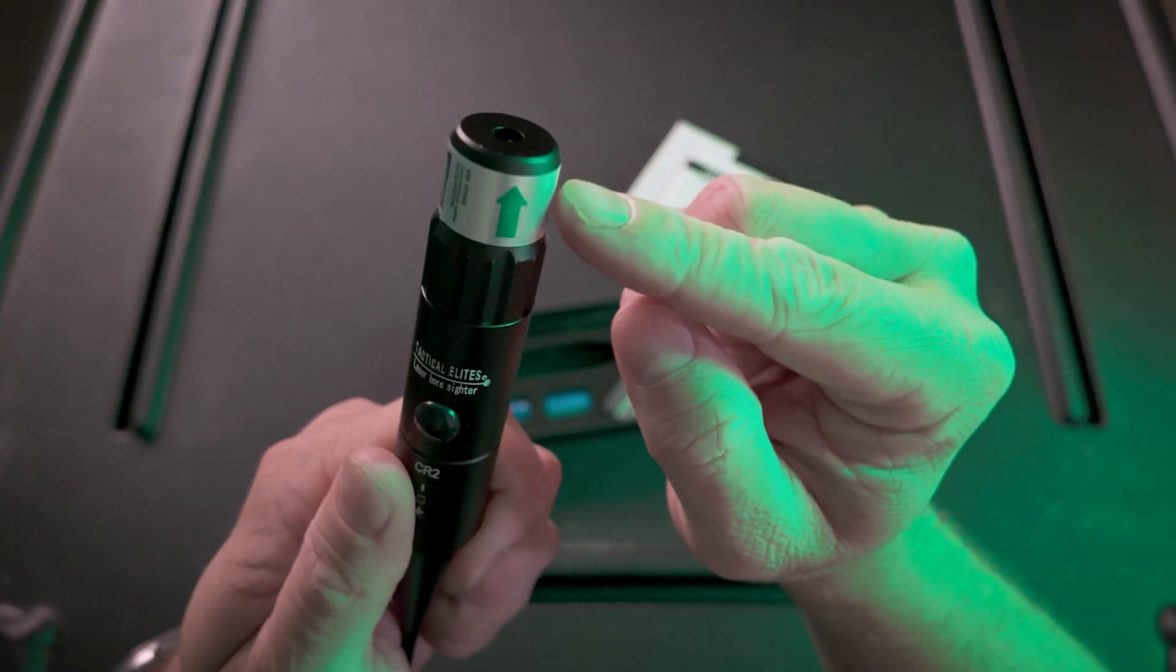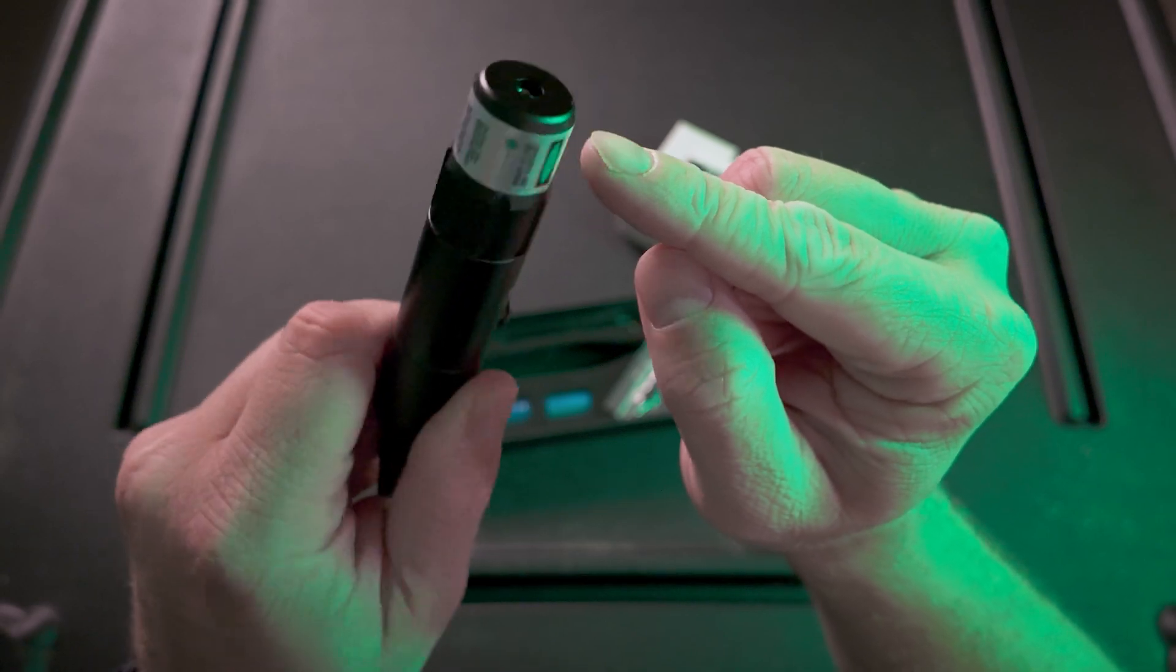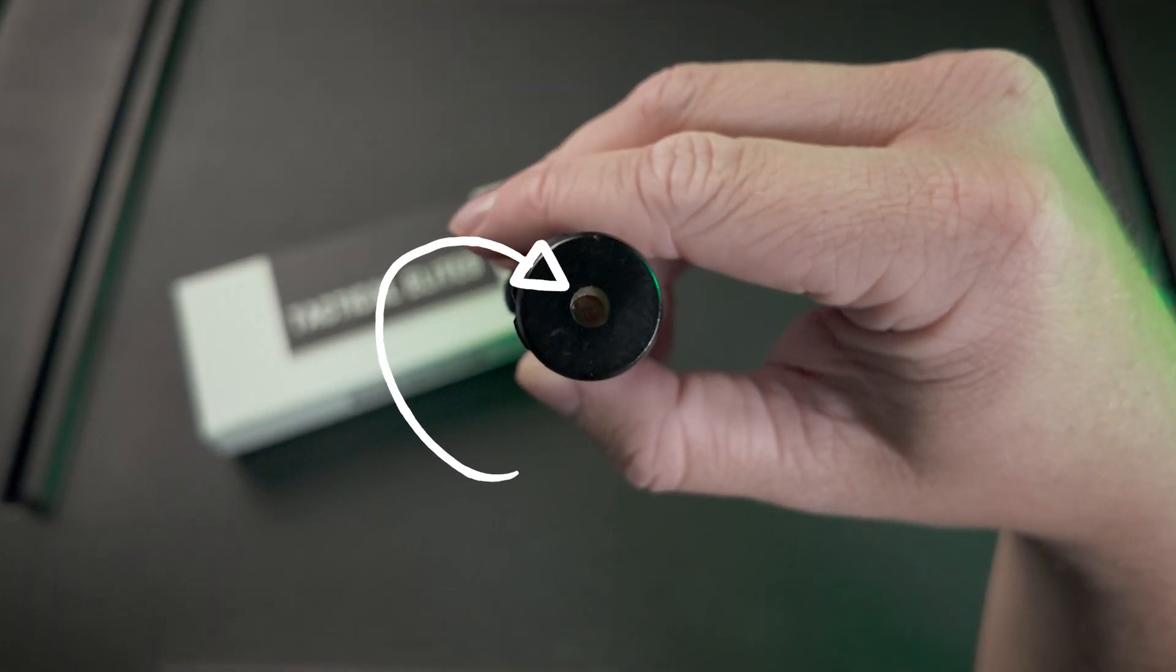Remove the sticker from the outside of the SightRite Boresighter and find the Allen wrench located inside your box. With the laser turned off, look at the bronze ring around the light.